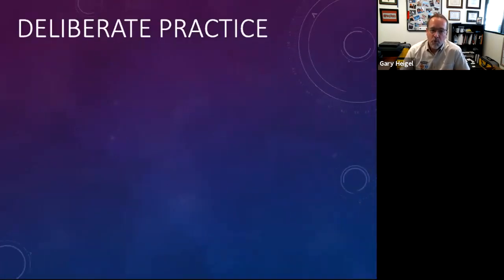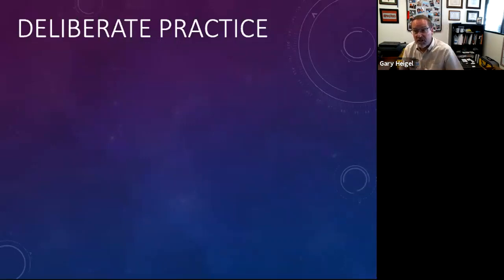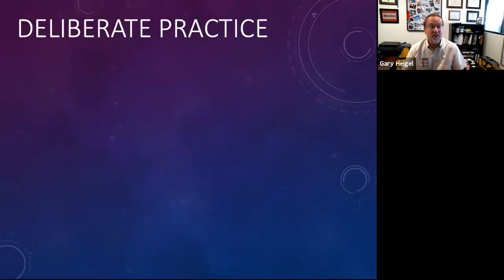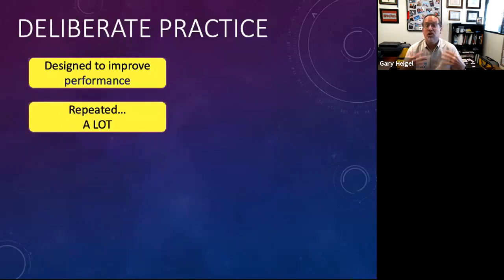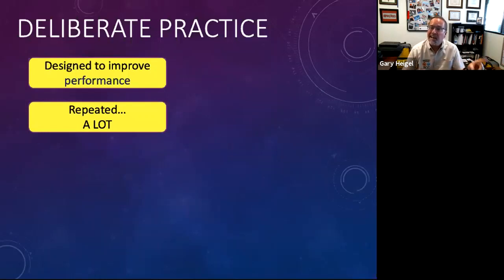The first is deliberate practice, and this is very different from rote practice. You hear 'practice makes perfect,' but effective practice may make for proficiency while rote practice alone does not. Doing something over and over incorrectly means you get very consistently and reliably wrong. What we're really talking about is a designed approach to repetition — a designed approach to improve performance. I have a banner in our skills lab that says, 'Don't practice until you get it right — practice until you can't get it wrong.'